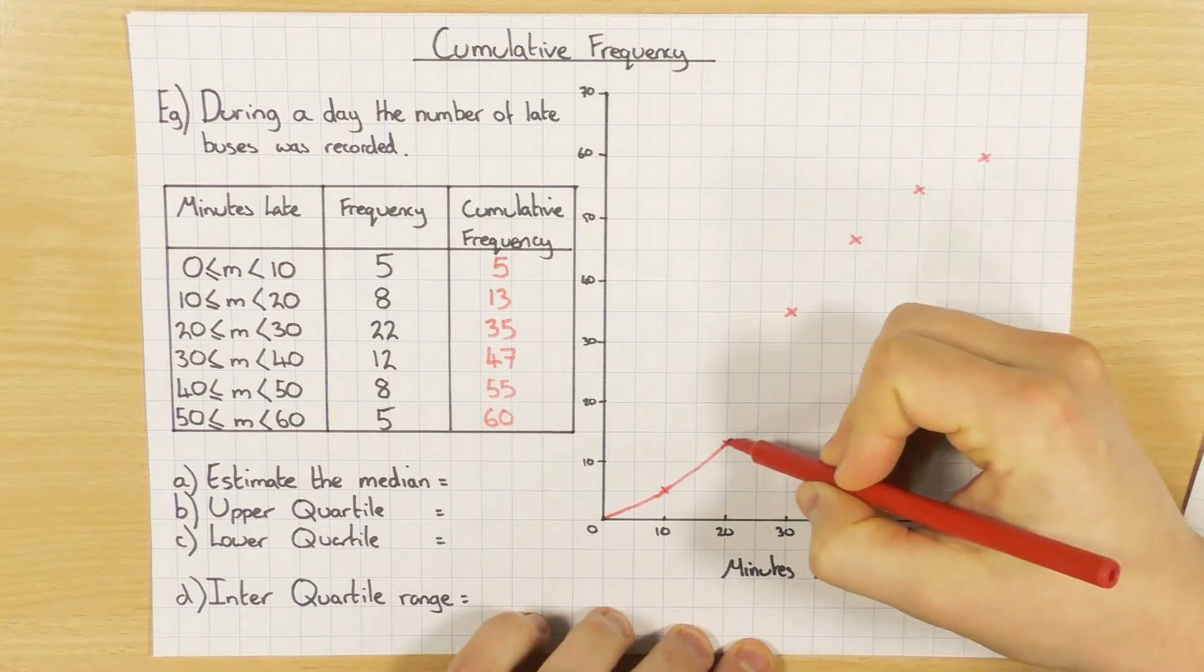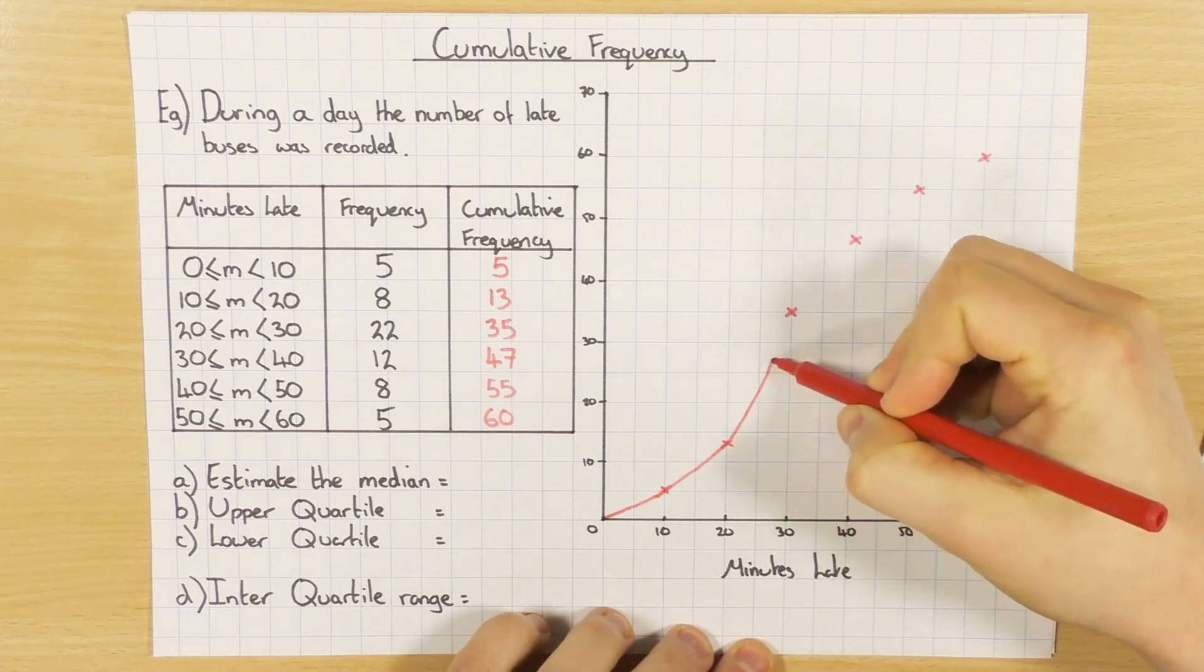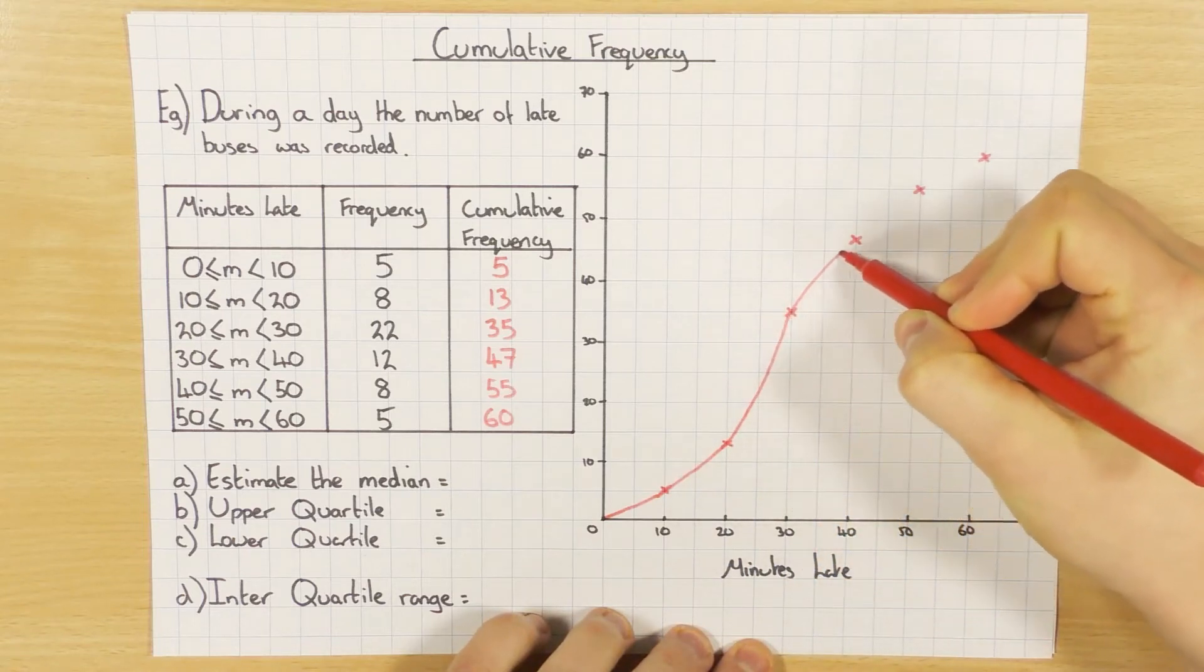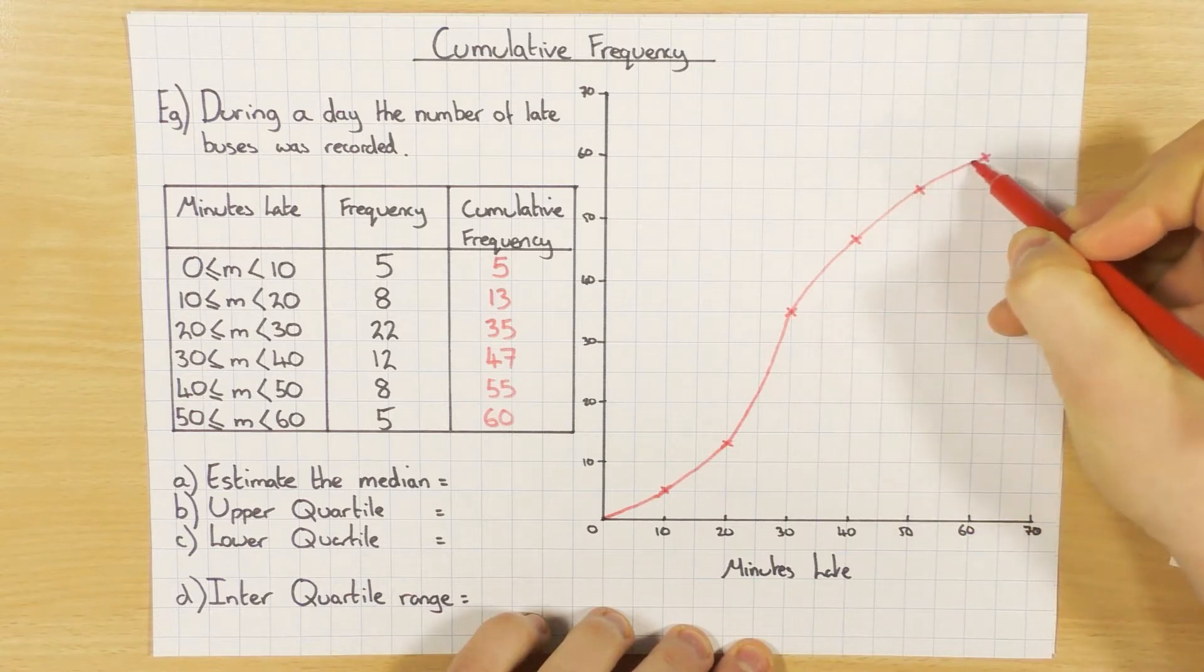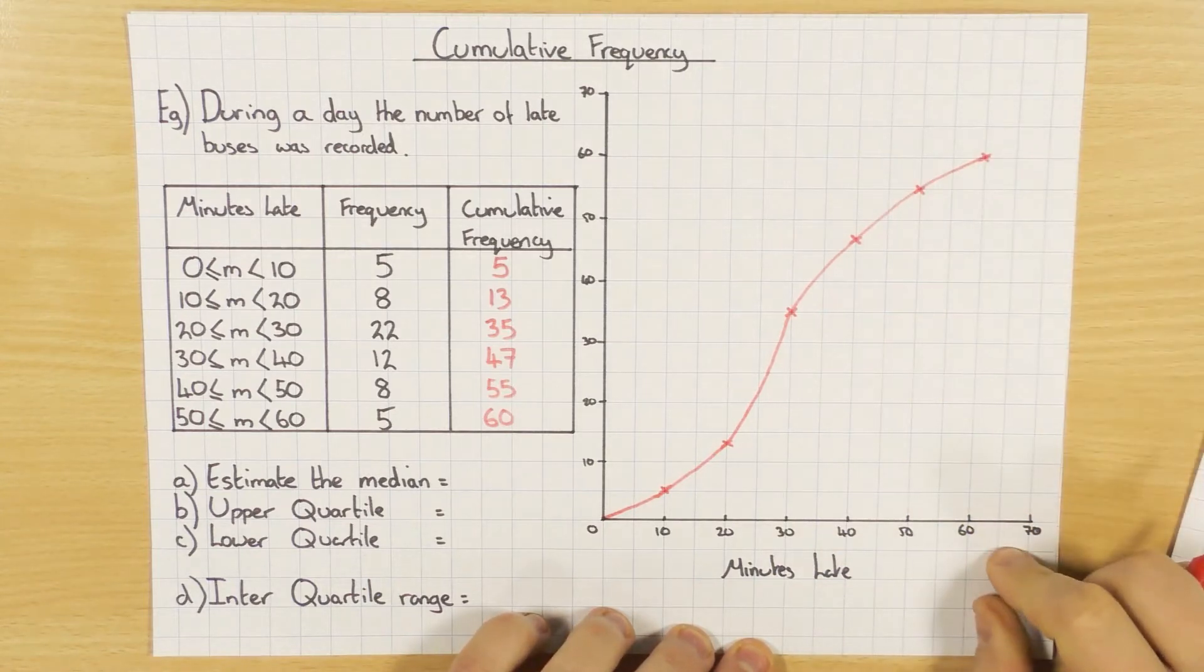So I'm going to do my best here and draw a nice smooth curve. Make sure you go through all the points, because otherwise you will lose marks. And as I say, use pencil, just in case you make a mistake. So there's my cumulative frequency curve.